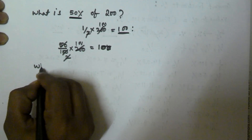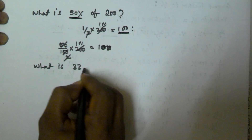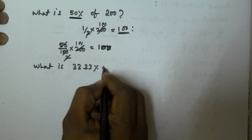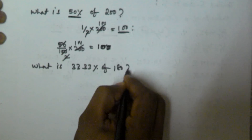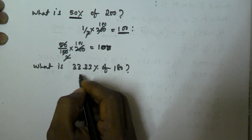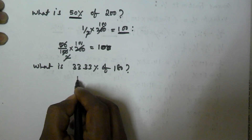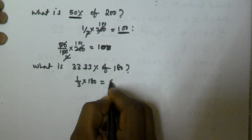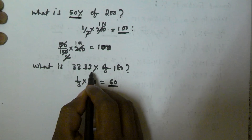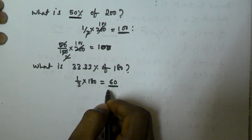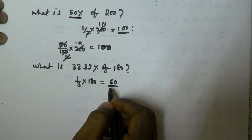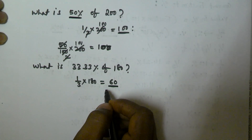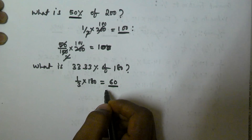For example, what is 33.33% of 180? We know 33.33% is equal to 1/3. So 1/3 into 180 is equal to 60. The answer is 60. In this way, remembering the percentage values and their corresponding fraction values will help in percentage calculations.